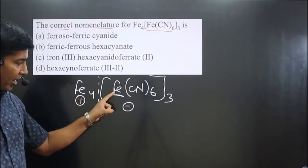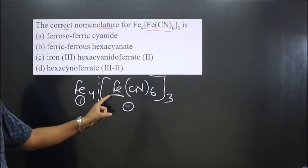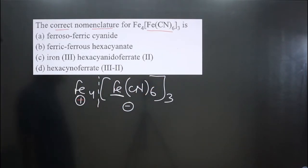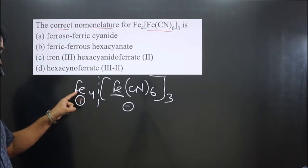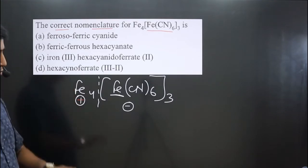When the central element is present in the anionic part, we have to use its special name. This is iron, so I will use 'ferrate'. And this is the counter ion, so we name it as usual.